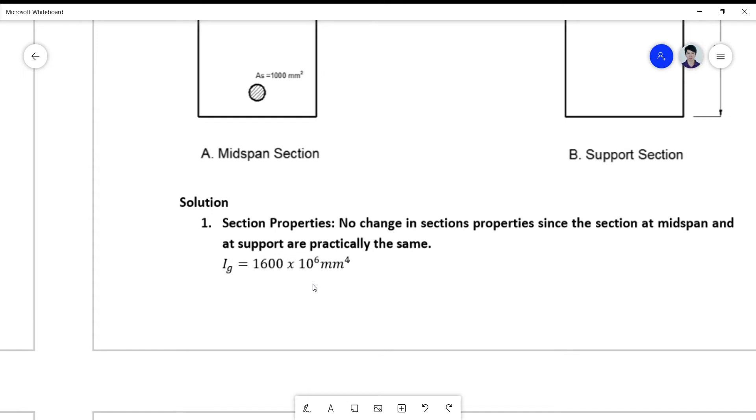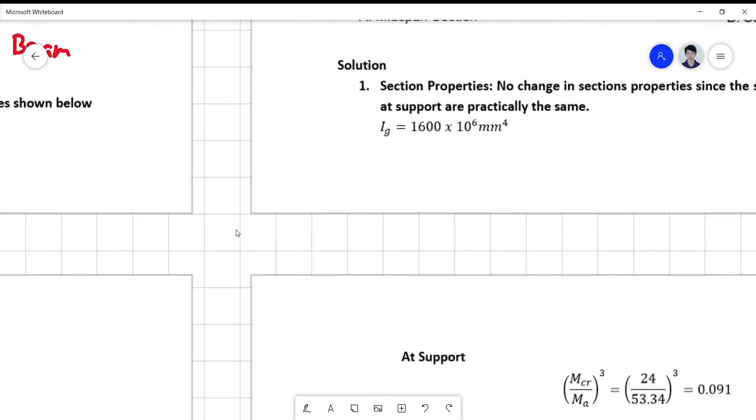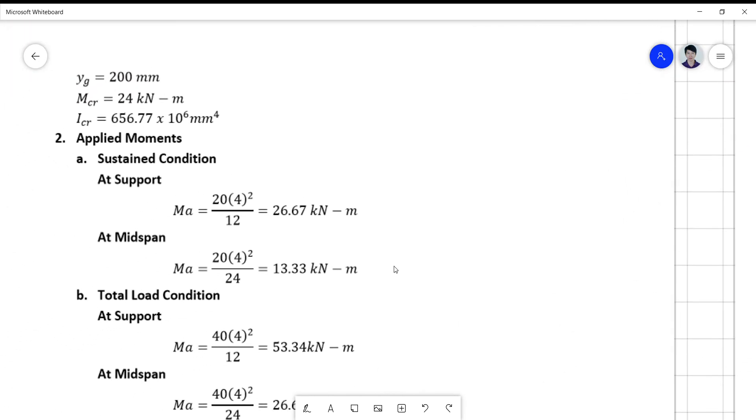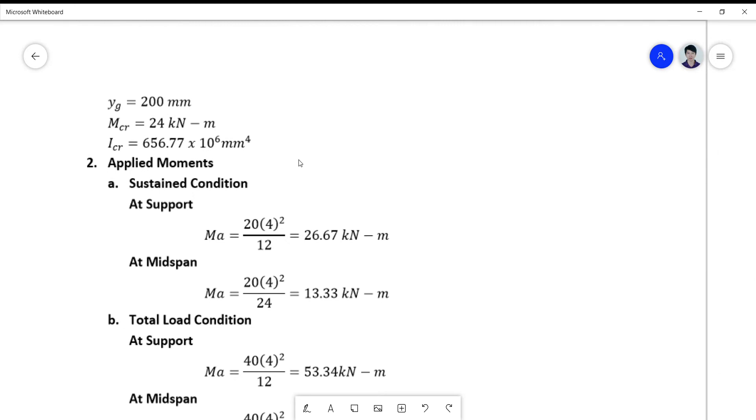The section properties are the same. IG is still 1600 times 10 to the 6, I crop is still 656.77, your YG is 200, and your MCR is still 24 kilonewton meters.